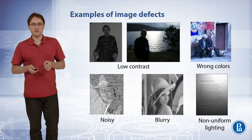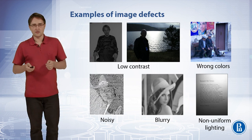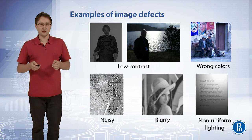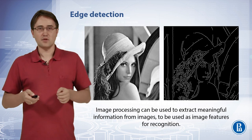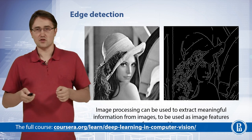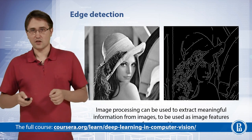Images can be noisy or blurry without sharp details. Lighting in captured documents can be non-uniform, where part of the text is very bright and part is very dark, making it very difficult to recognize such a document. Image processing can also be used to extract meaningful information, such as edges, which contain a lot of interesting information and can be used as image features for recognition. A lot of algorithms rely on edge detection.